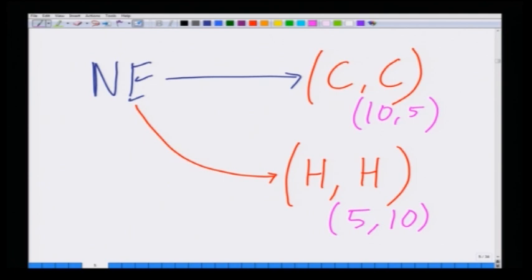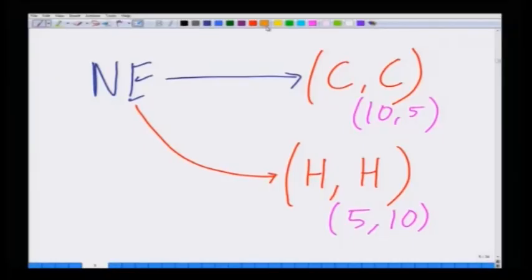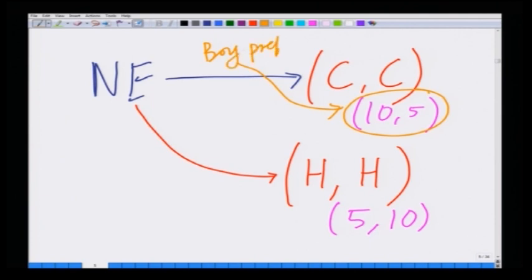Now you can see why this game is different from the coordination game, even though both have two Nash equilibria. In the Battle of Sexes, these two different Nash equilibria are different in the sense that each player prefers a different Nash equilibrium. For instance, the boy prefers the Nash equilibrium in which he is getting the higher payoff of 10, that is the C comma C equilibrium, while the girl prefers the H comma H Nash equilibrium since she receives the higher payoff of 10 in that equilibrium.